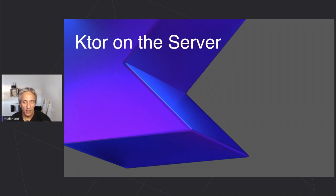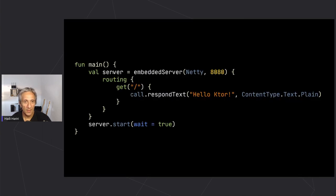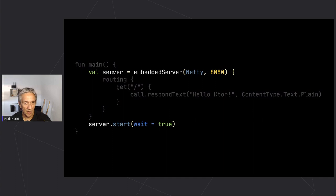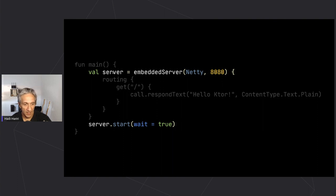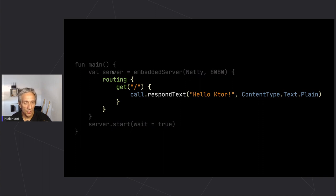Let's take a look at Ktor on the server. Here is essentially your Hello World Ktor application, encapsulated in a Kotlin console application. We have a server launched using an embedded server, and the embedded server can use different engines such as Netty, Jetty, Tomcat, and others including CIO — which stands for Coroutines I/O — currently experimental but the direction we're taking for multi-platform Ktor on the server. In this case we're using Netty and starting the server on port 8080.